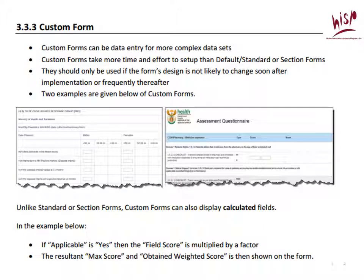Finally we have the custom forms, and this is for when you really want to make your data set custom to your uses. You actually have a WYSIWYG editor in DHIS2 where you can build the entire form from scratch — it's almost like a 1995 website. This is very useful because, as you can see here, you can create a form that will reproduce the look and feel of a form you've been using for a long time or that you know works very well for you, so you don't have to feel constrained by DHIS2.